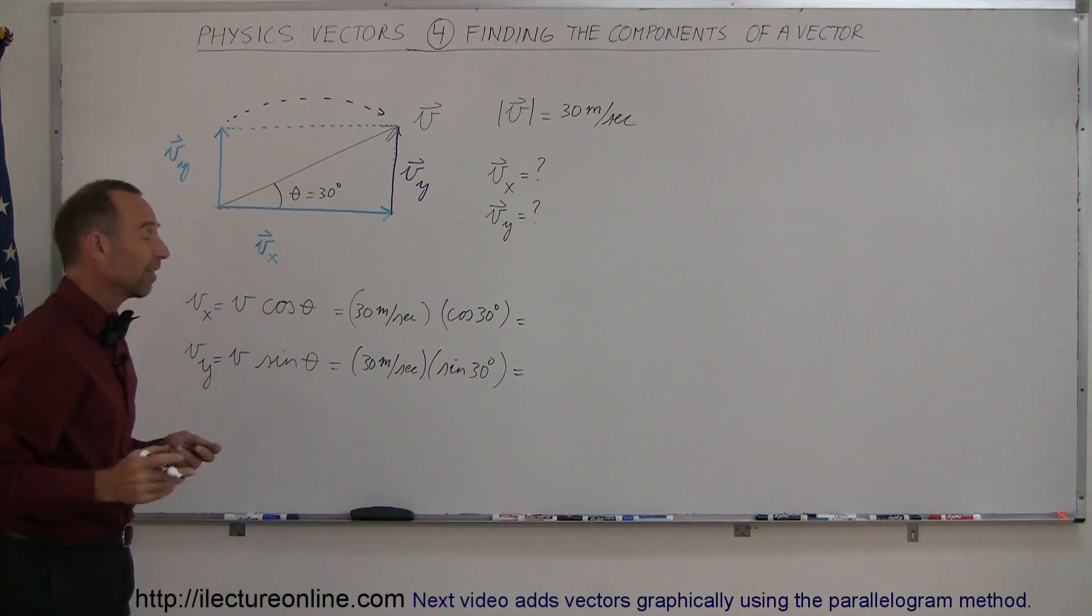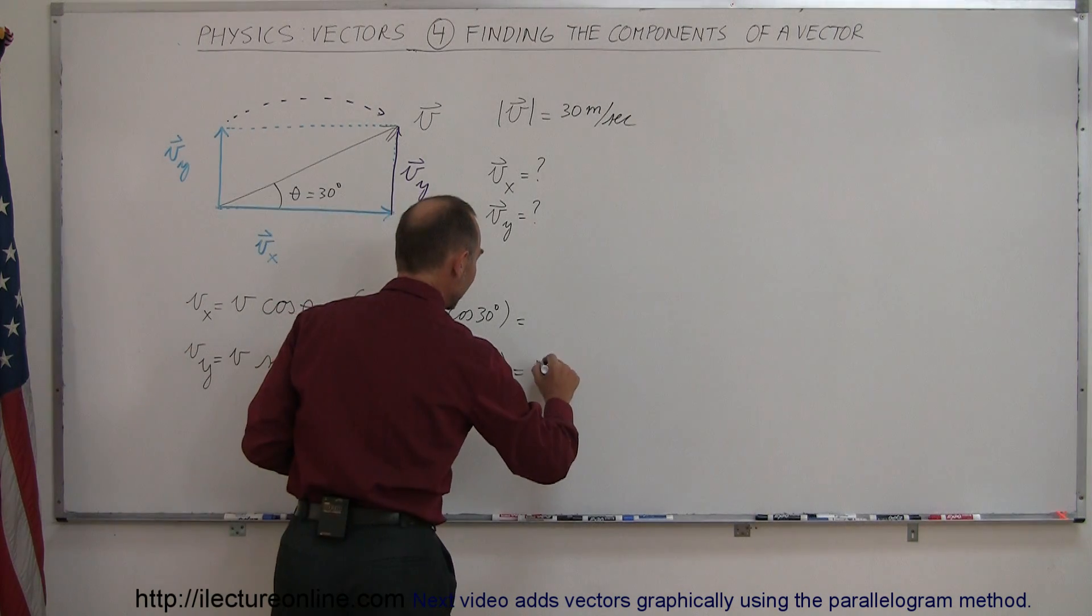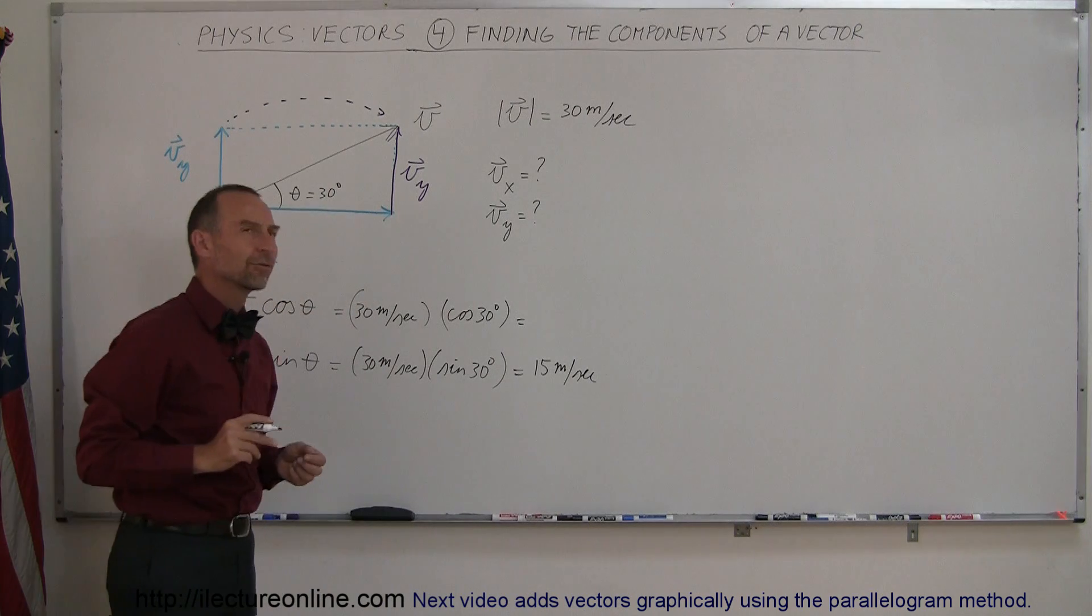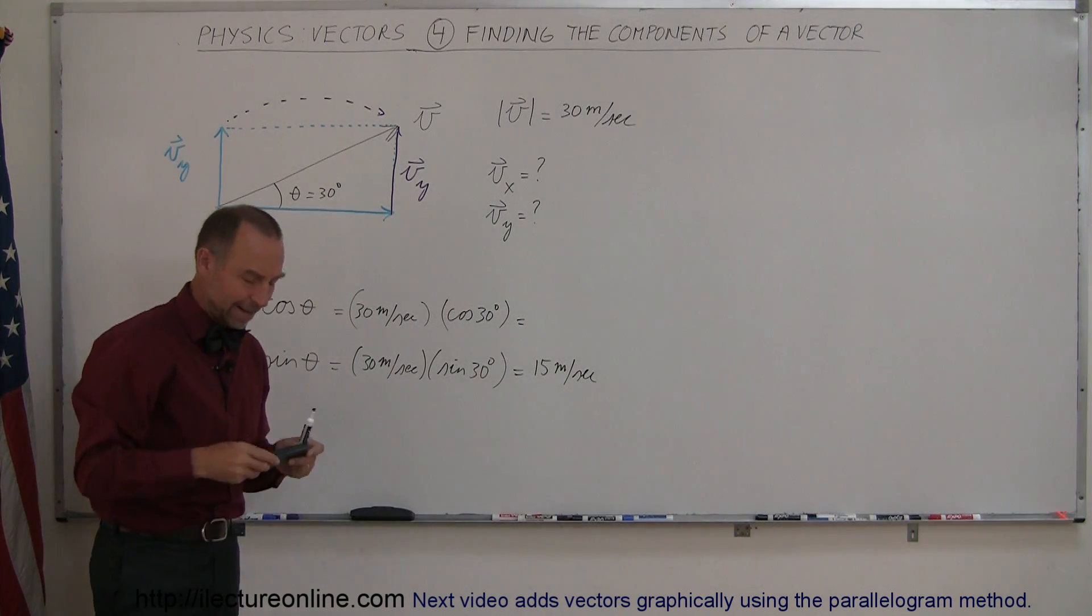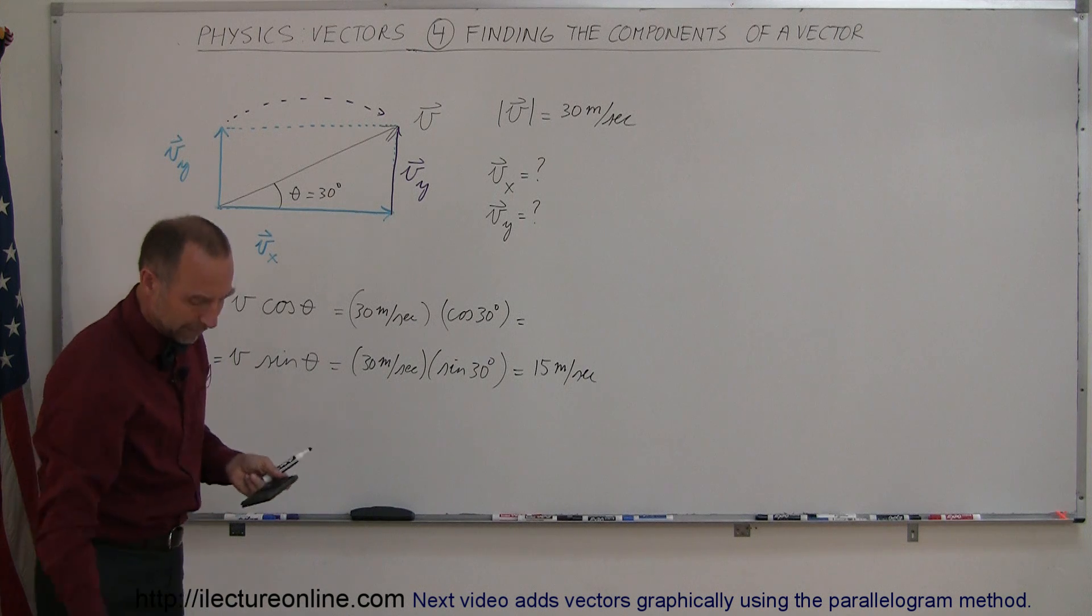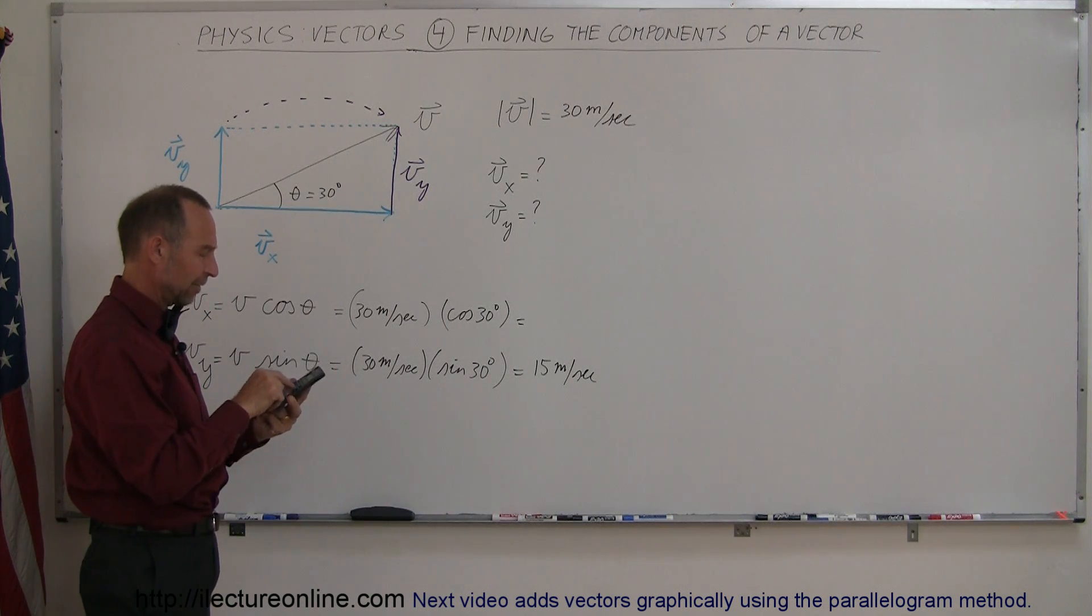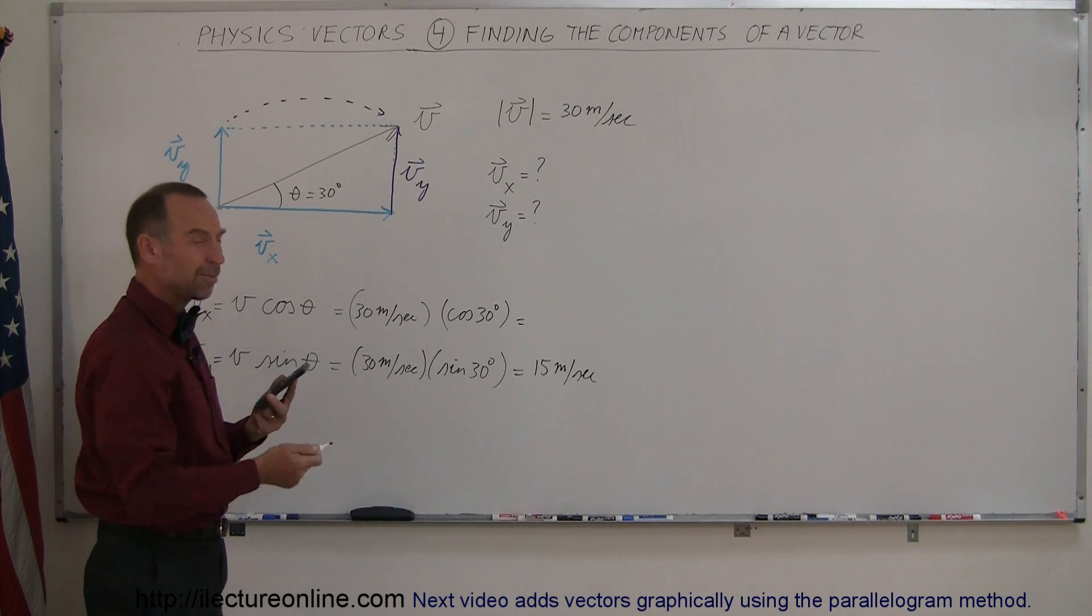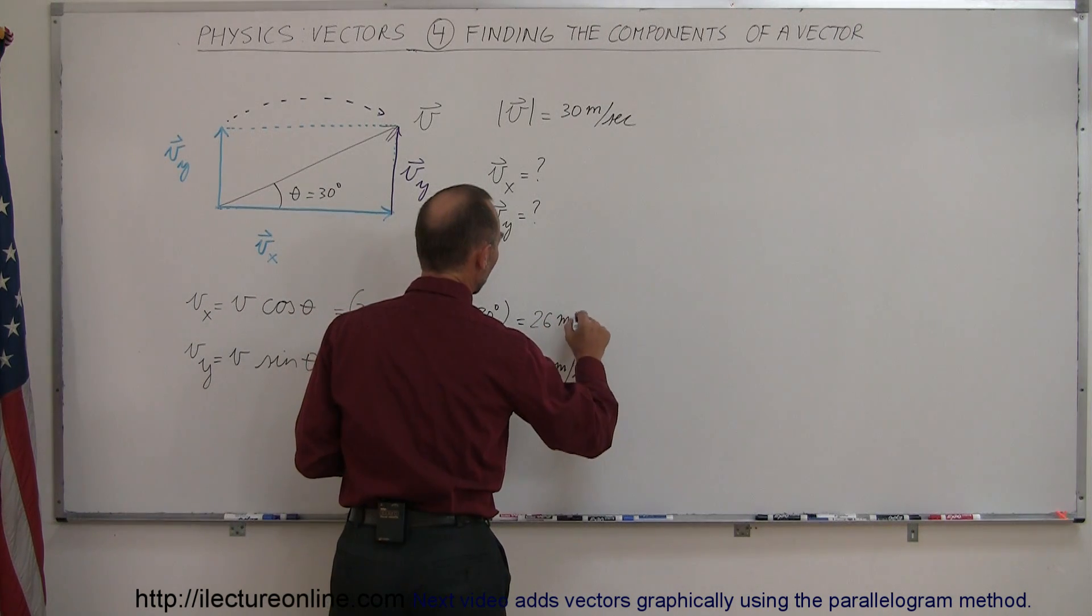Okay, now the sine of 30 degrees, that's 1 half, so 1 half times 30 meters per second would be 15 meters per second. Now what about the cosine of 30 degrees? Well that's 0.866. Let's find out what that's equal to. So we have 30, take the cosine of that, and multiply it times 30, and we get 25.98, that's close enough to 26 meters per second.